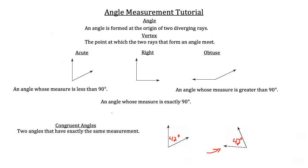And you could say it in a couple ways. If this had a measurement of 2x, then this angle had a measurement of 2x because they're congruent. They have exactly the same measurement.